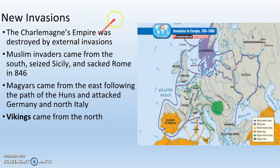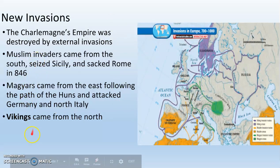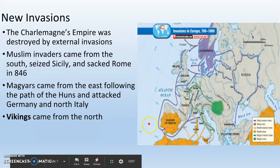Ultimately, Charlemagne's Frankish Empire is going to be destroyed by external invasions: Muslims in the south, Magyars from the east, and Vikings from the north. Muslims actually, at this point in history, conquer almost all of Spain, which is a big deal. Magyars are coming in from the east attacking modern-day Germany, and Vikings are coming from the north and raiding.